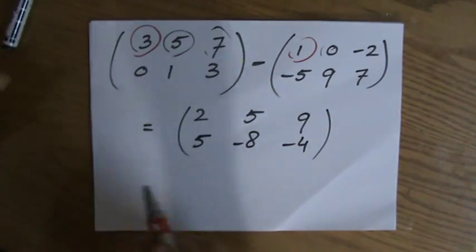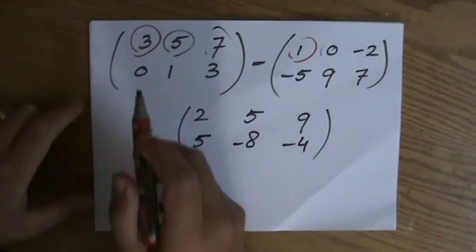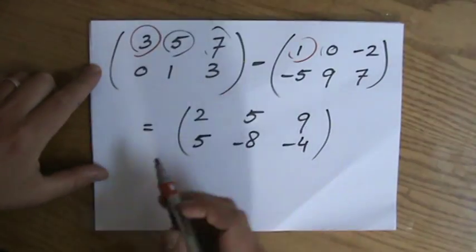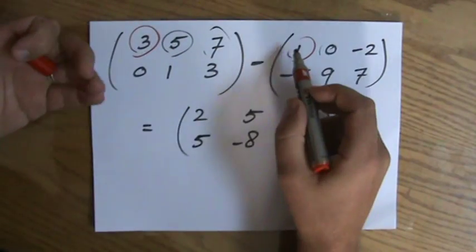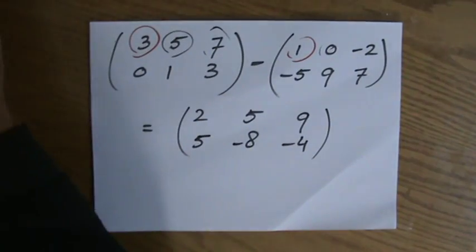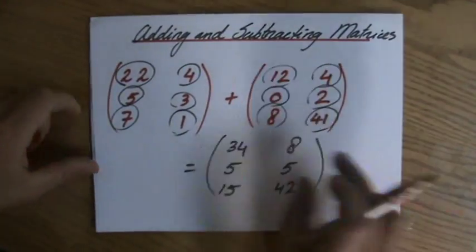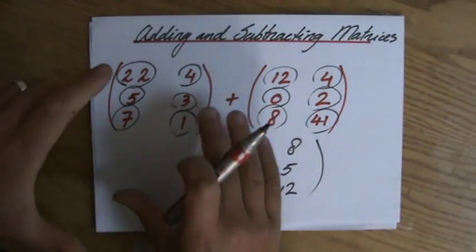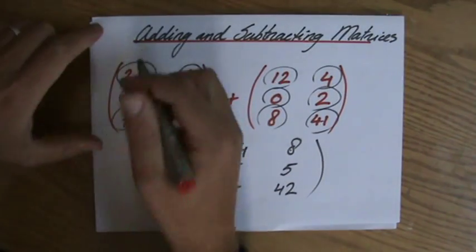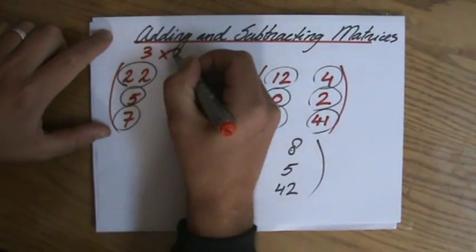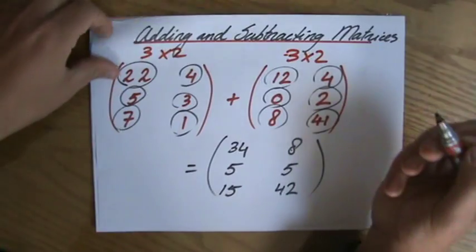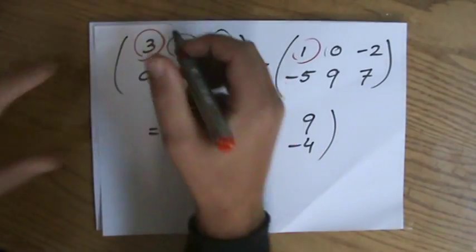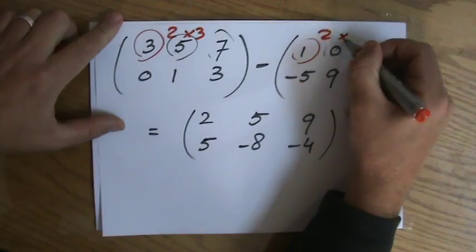Now, just to finish this, just for your understanding, this being a 2 by 3 matrix, the order, and that is also a 2 by 3 matrix. And in the previous example, I had a 3 by 2 matrix, and I added another 3 by 2 matrix there. So that was a 3 by 2, and that is a 3 by 2, and the order of these are a 2 by 3, and a 2 by 3.